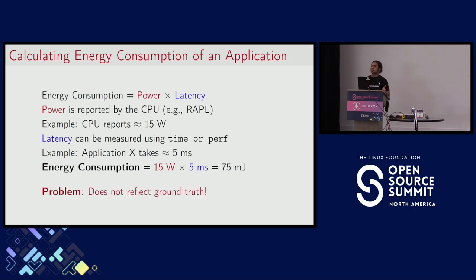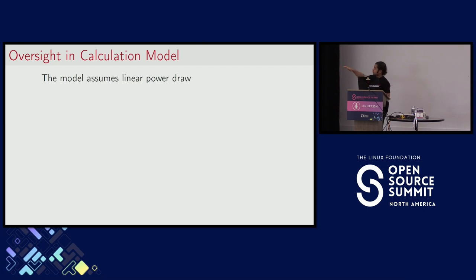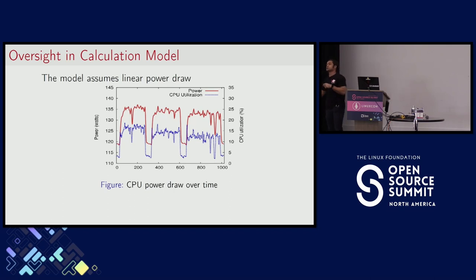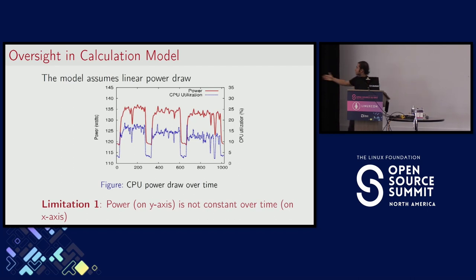It turns out this does not reflect the ground truth — it's as far from the ground truth as we can be. This model assumes a linear power draw: it assumes CPU power is flat over the entire 5 milliseconds. That is simply not the case. This is how an actual power draw looks: you can see a typical trace where the CPU switches states very quickly over time, with a lot of valleys and peaks. If you happen to measure power at a valley, you would not see the bulk of the power consumption and would work with a completely incorrect value. So the first limitation is that power is not constant over time.